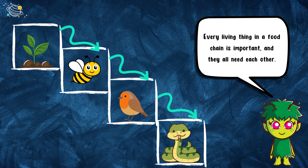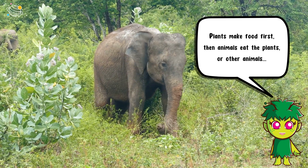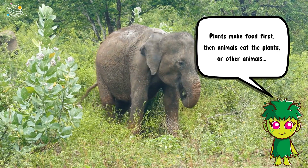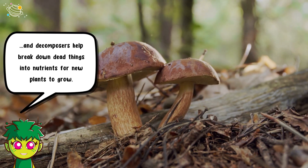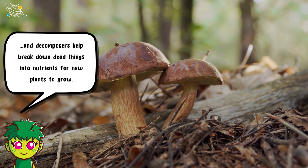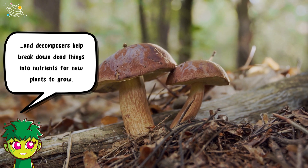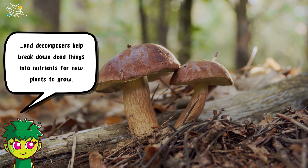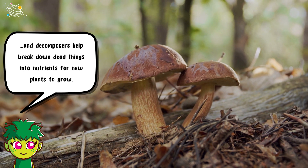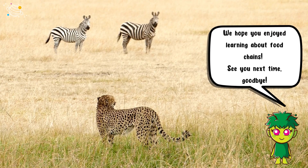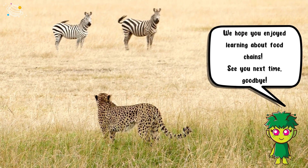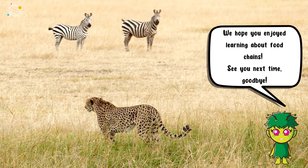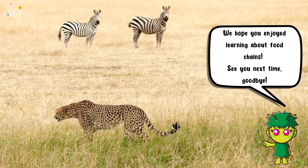Every living thing in a food chain is important and they all need each other. Plants make food first, then animals eat the plants or other animals, and decomposers help break down dead things into nutrients for new plants to grow. We hope you enjoyed learning about food chains — see you next time, goodbye!